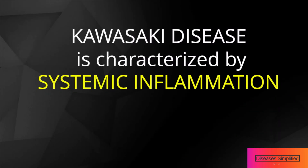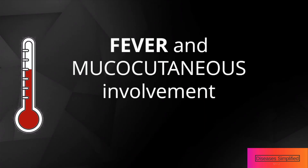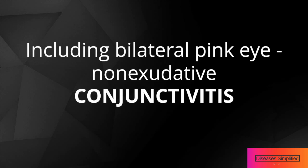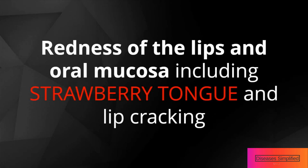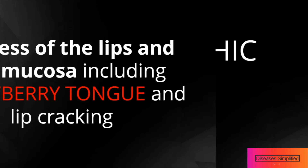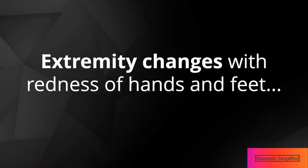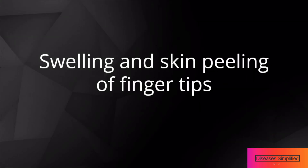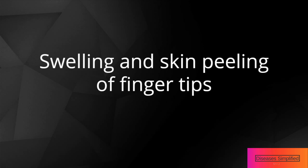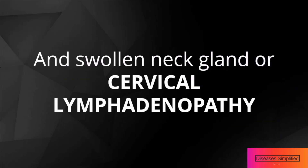Kawasaki disease is characterized by systemic inflammation, manifested by fever and mucocutaneous involvement, including bilateral pinkeye, non-exudative conjunctivitis, redness of the lips and oral mucosa including strawberry tongue and lip cracking, polymorphic rash, extremity changes with redness of hands and feet, swelling and skin peeling of fingertips, and swollen neck gland or cervical lymphadenopathy.